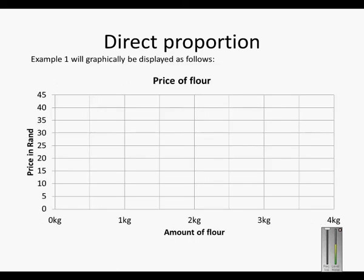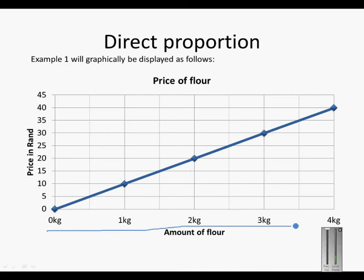Example 1 can be displayed as follows. If you don't buy flour, you will not pay any money. 1 kilogram is 10 Rand. 2 kilograms is 20 Rand. 3 kilograms will be 30 Rand. And 4 kilograms will be 40 Rand. Do you see that this is a positive sloping graph? As the amount of kilograms increases, the amount that you have to pay also increases.